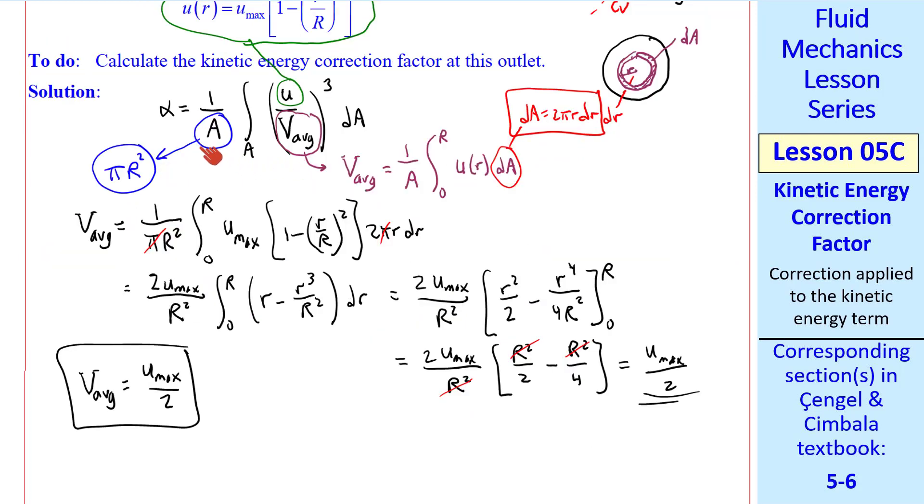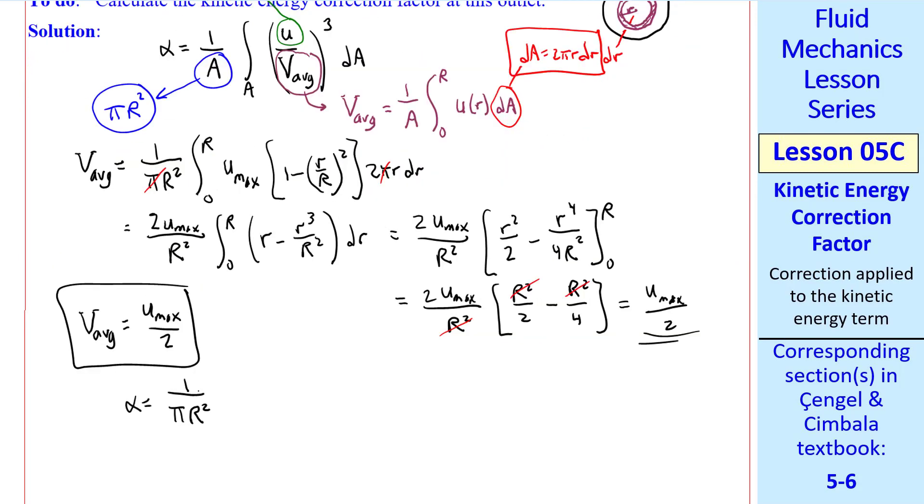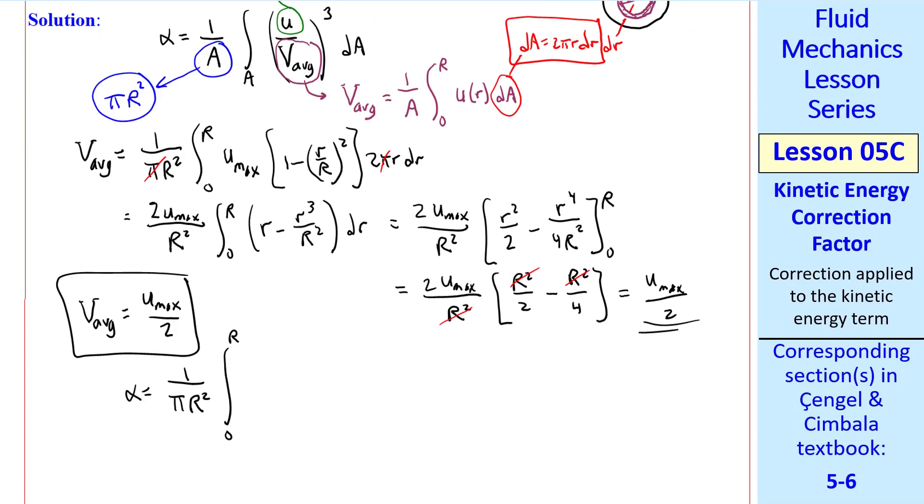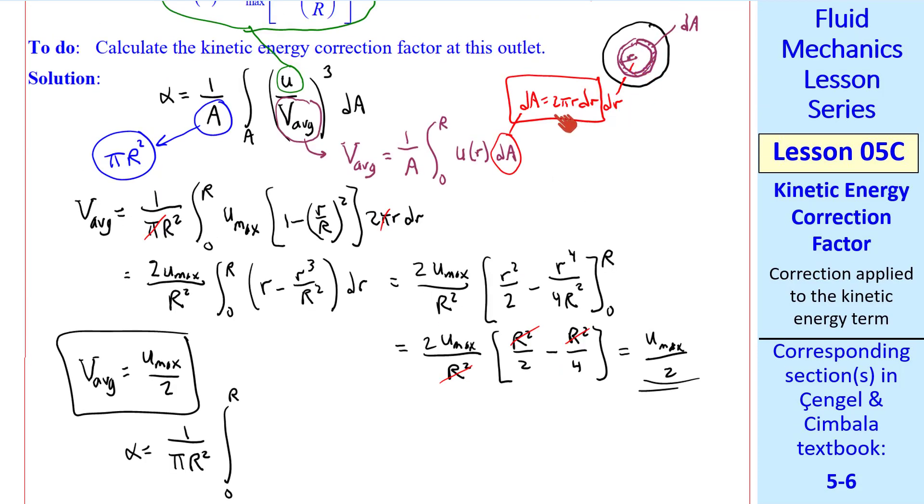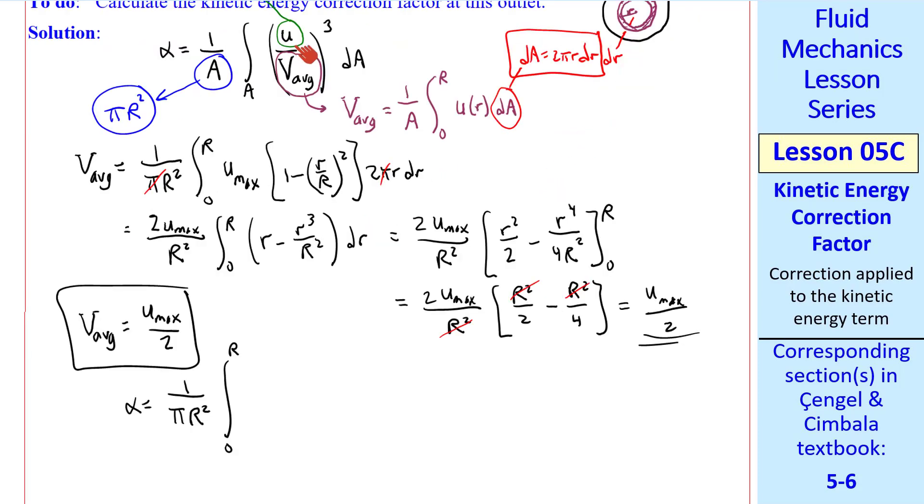Now let's go back to our equation for α. α equals 1 over the area. We use the same dA as we did for calculating the average speed, namely this ring of area 2πr dR. And we plug in our u again from the given velocity profile. And that whole thing is cubed, because of this term, divided by v_avg cubed. Plugging in this v_avg, we have u_max over 2 cubed. And then again, our dA is 2πr dR.